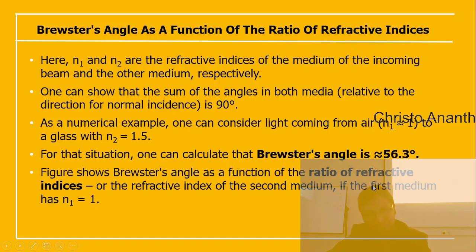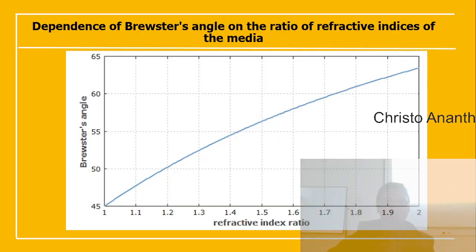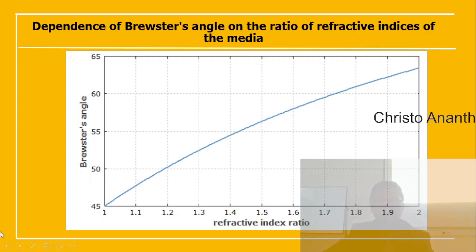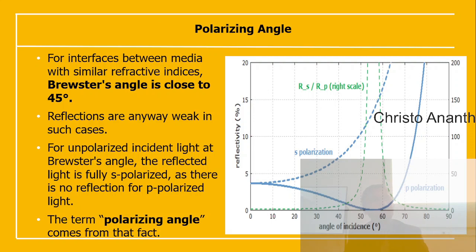A graph of Brewster's angle as a function of the refractive index ratio shows that, with n₁ = 1 fixed, as the refractive index of the second medium increases from 1 to 2, the Brewster's angle gradually increases from about 45° up through 55°, 60°, and 65°.